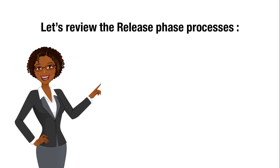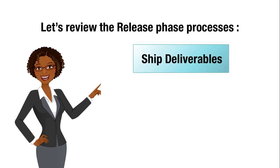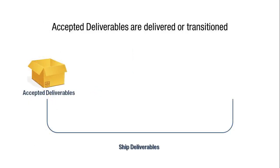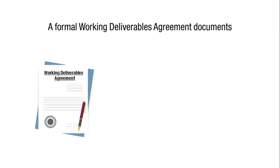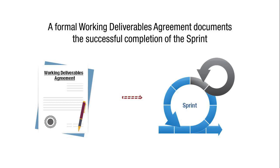The first process is Ship Deliverables. In this process, accepted deliverables are delivered or transitioned to the relevant stakeholders. A formal working deliverables agreement documents the successful completion of the sprint.